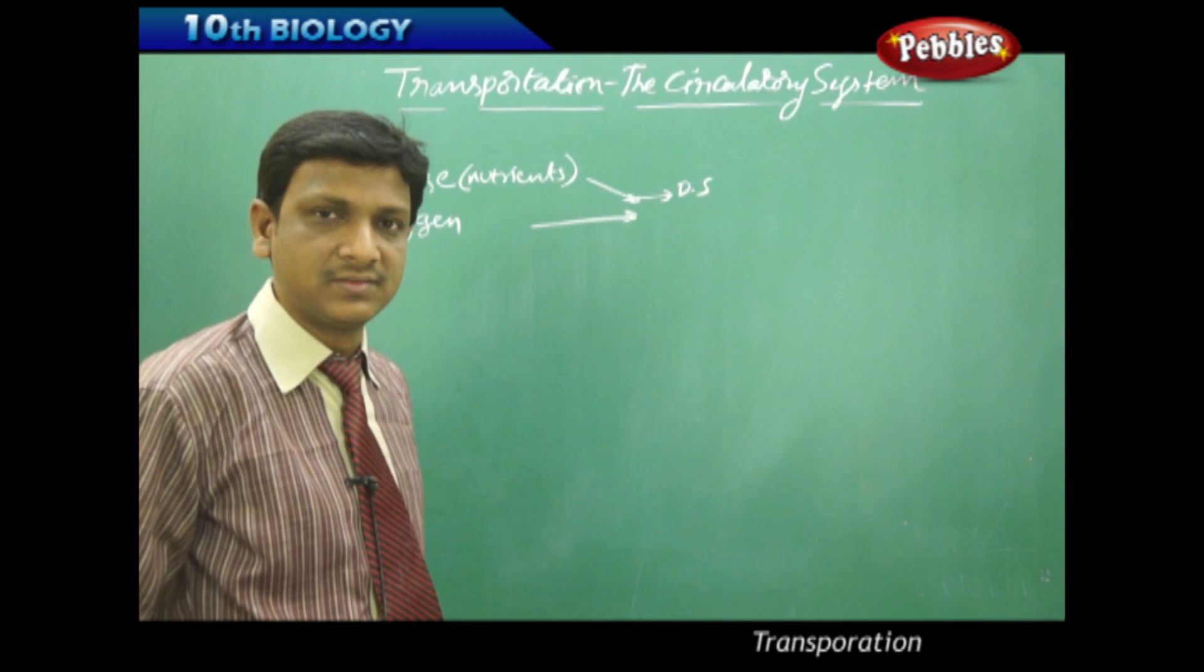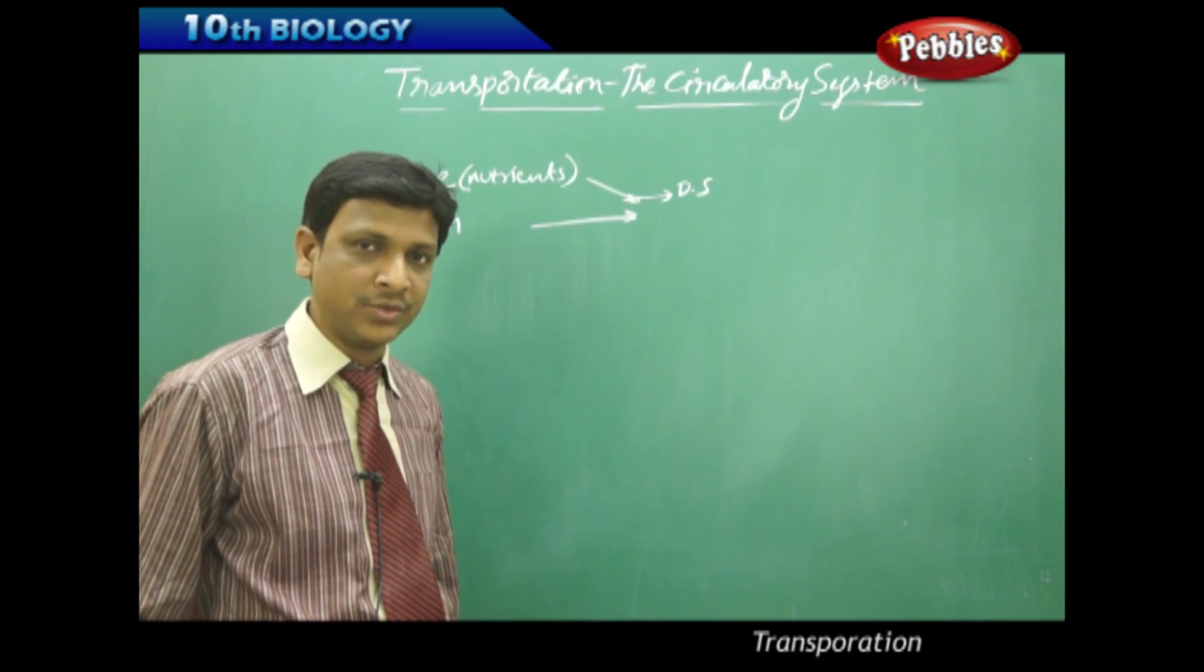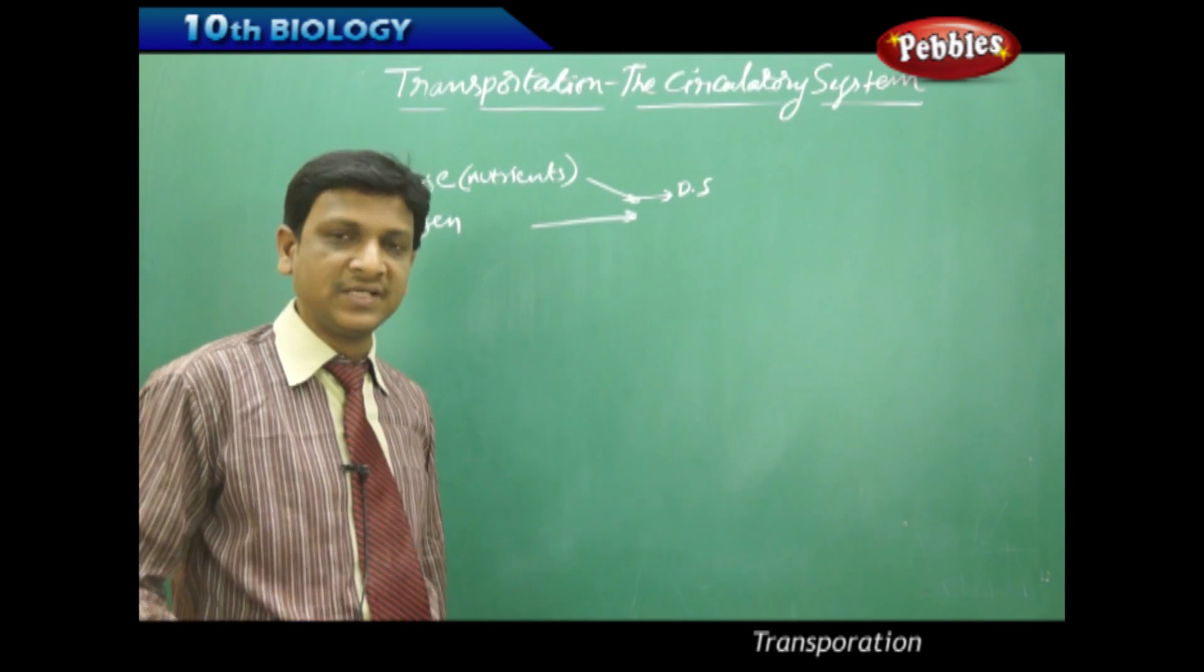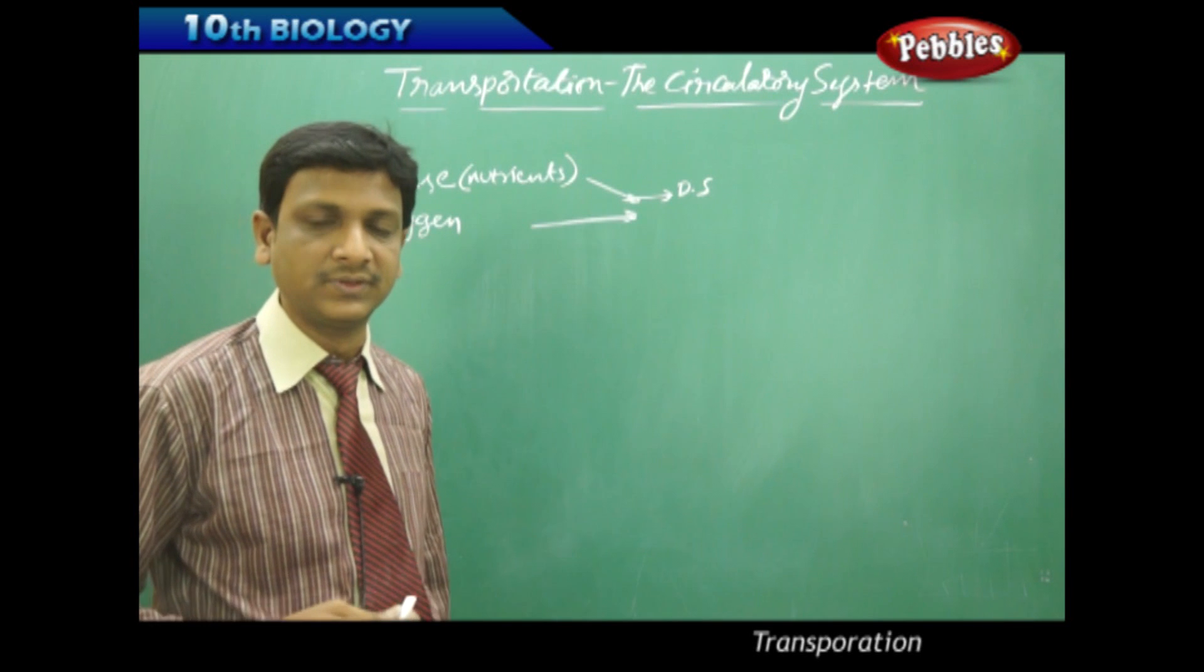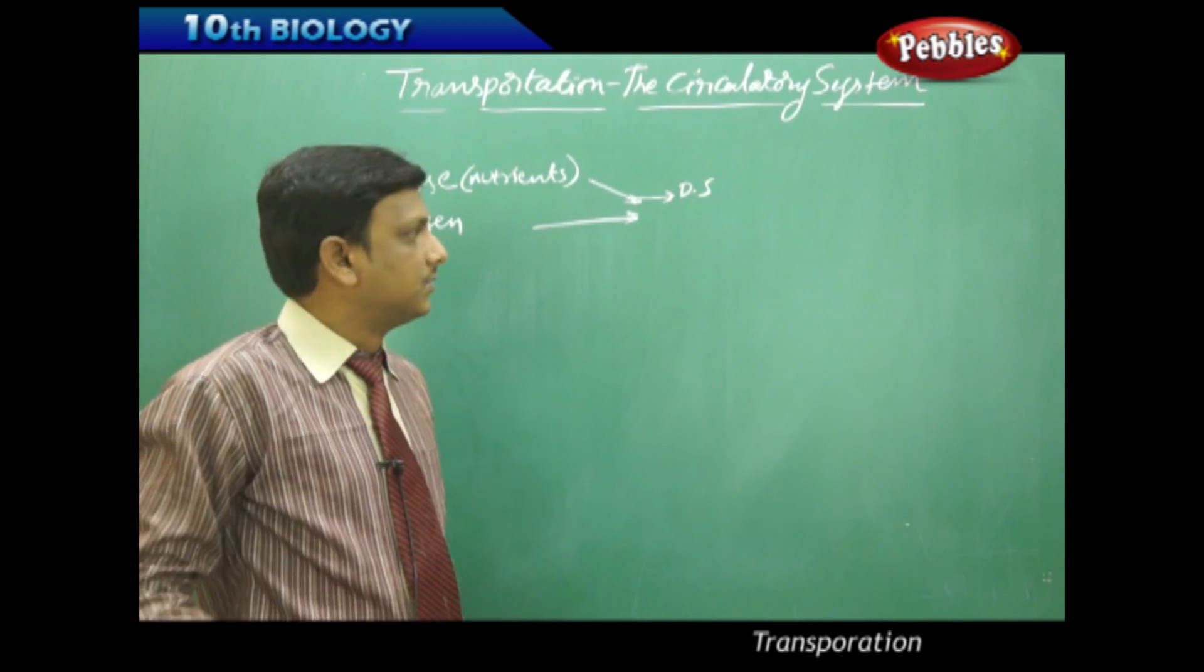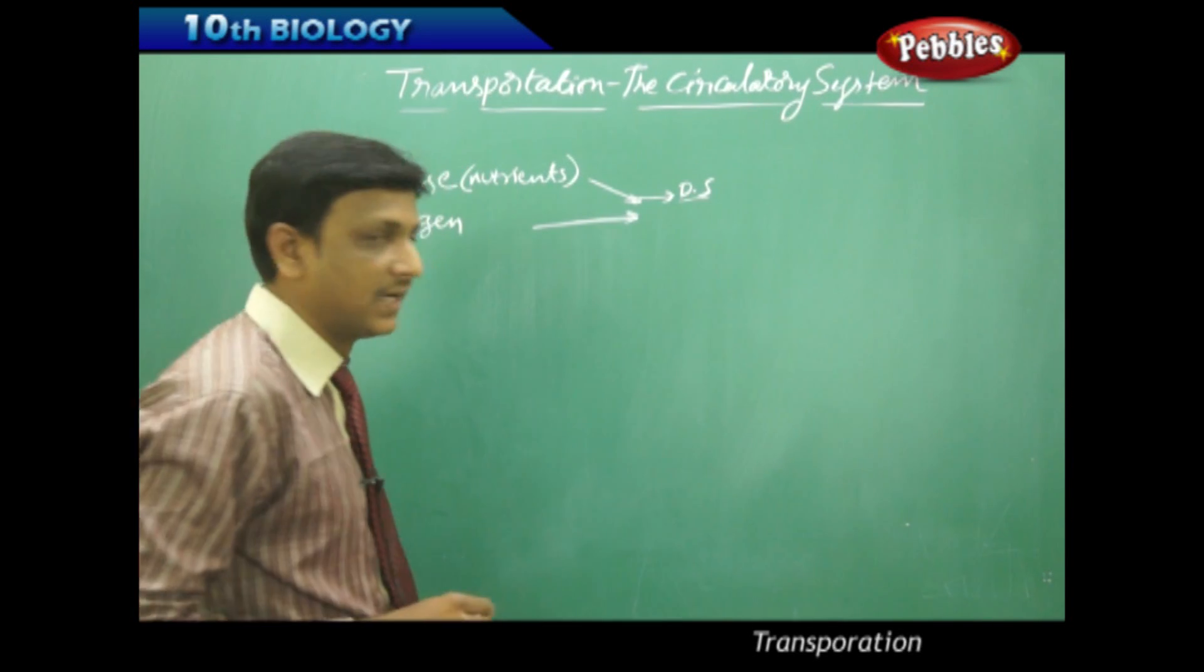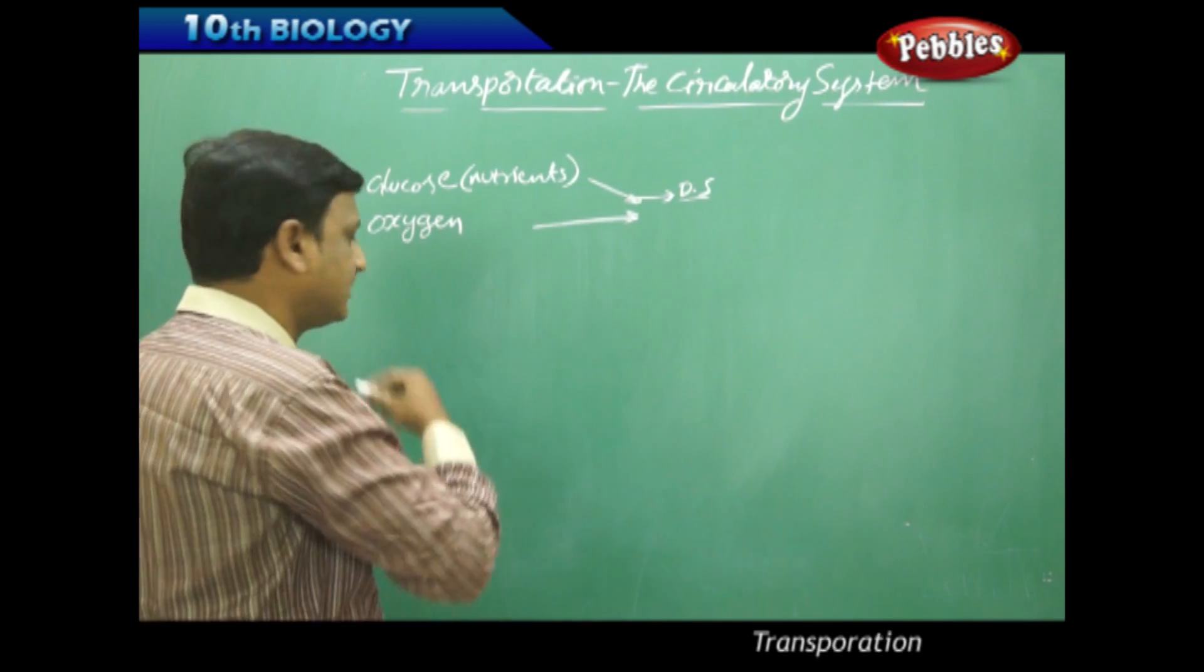But where are the cells? Cells are there throughout our body. The nutrients at the place of production, where they are converted into simple nutrients in the digestive system, in the small intestine. So the nutrients are available in the digestive system, but they are to be supplied to various cells of our body, even the oxygen.